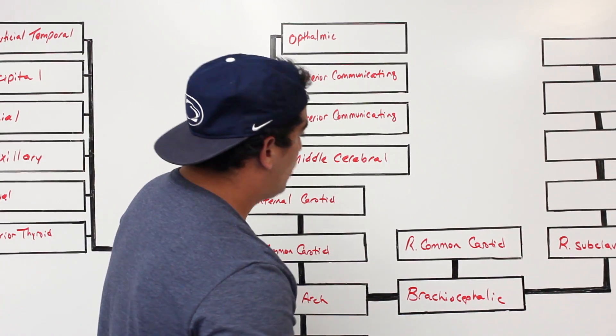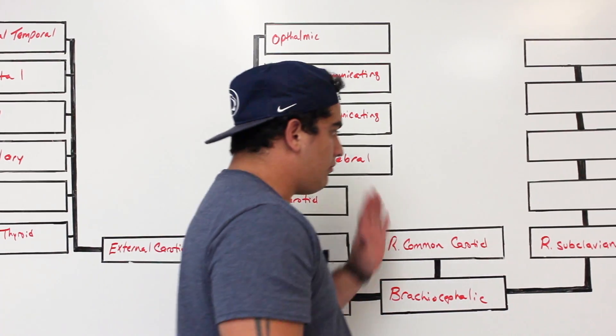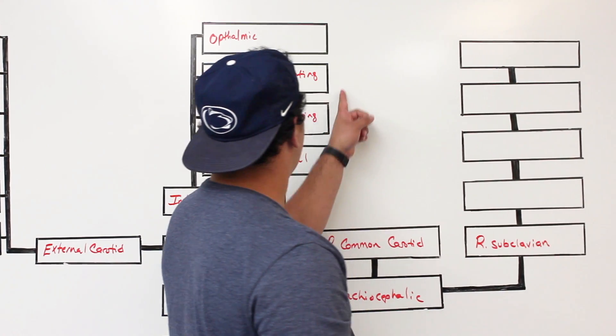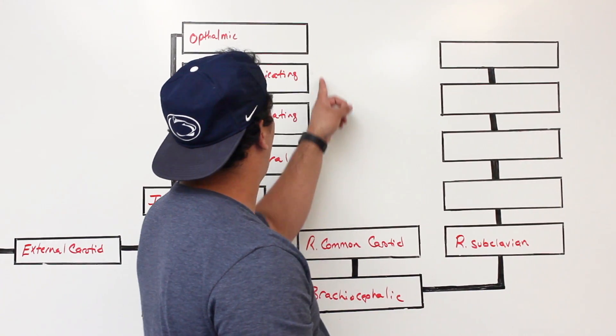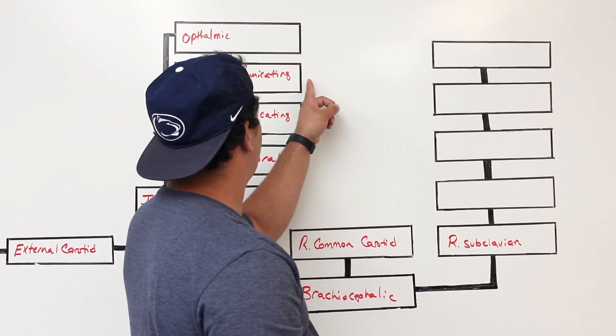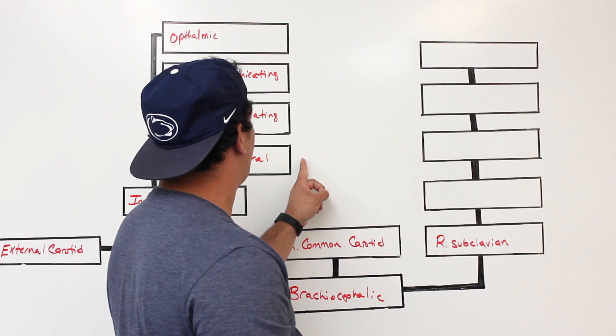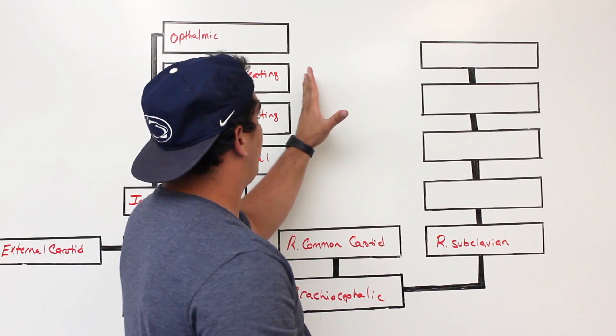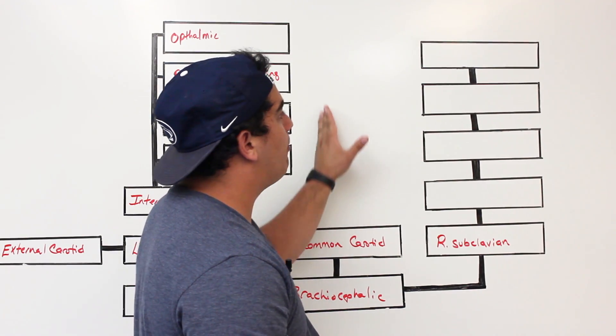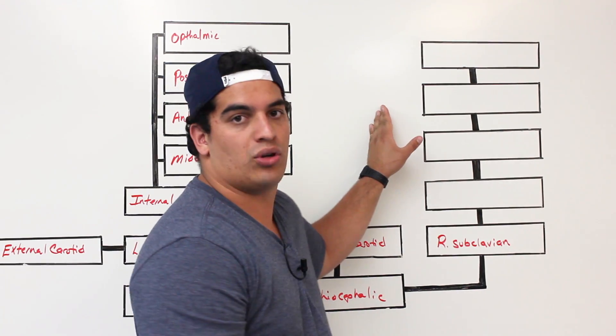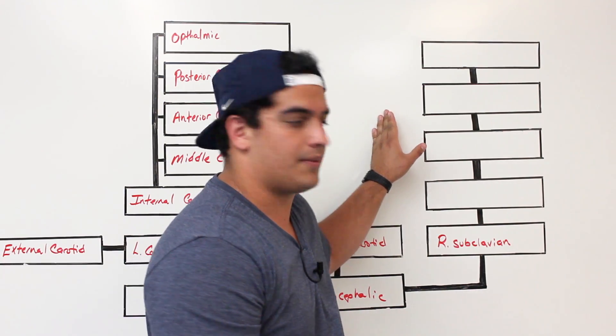To be very clear: the posterior communicating, anterior communicating, and middle cerebral arteries are all very important components of what's called the Circle of Willis.